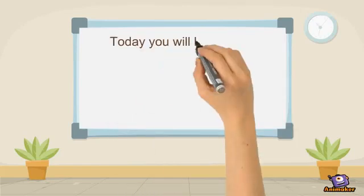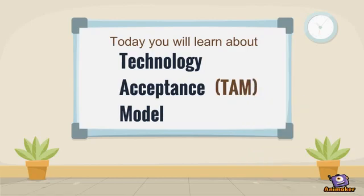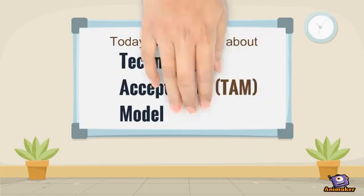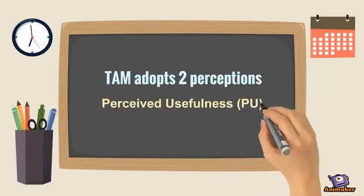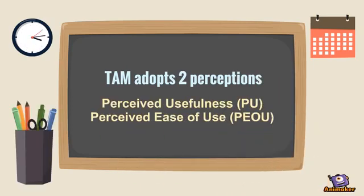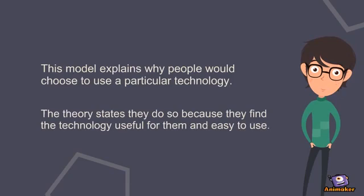Hi everyone, today you will learn about the technology acceptance model, TAM. The technology acceptance model adopts two perceptions: perceived usefulness and perceived ease of use. This model explains why people would choose to use a particular technology, and the theory states that they do so because they find the technology useful for them and easy to use.